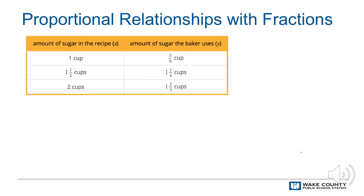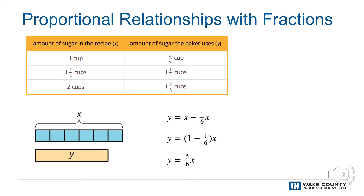the baker will leave out one-sixth times two, or one-third cups of sugar. That means the baker will only use one and two-thirds cups of sugar. The amount of sugar the baker actually uses, y, is proportional to the amount of sugar called for in the recipe, x. The constant of proportionality is five-sixths.